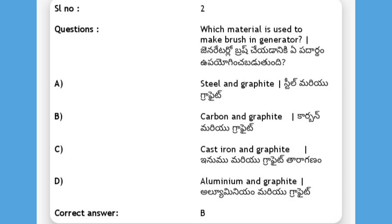Which material is used to make the brush in a generator? Options: steel and graphite, carbon and graphite, cast iron and graphite, aluminum and graphite. The answer is B, carbon and graphite.